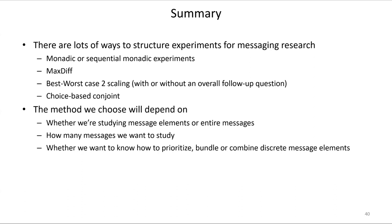Regarding usability for conjoint experiments where attributes are full messages — yes, it could get taxing if messages are long. The first type of conjoint, where we're doing combinations of message elements, works really well if elements fall naturally into categories. On one occasion I did a conjoint experiment where messages didn't fall naturally into categories — the client just wanted to show eight messages at a time in different conjoint questions. That was much tougher to design; we got it done and it was a nice study, but it was a bear of a thing to design.